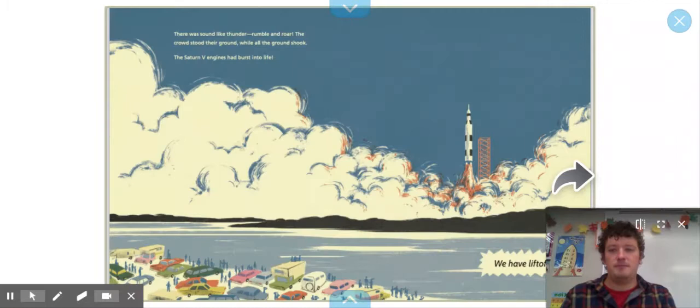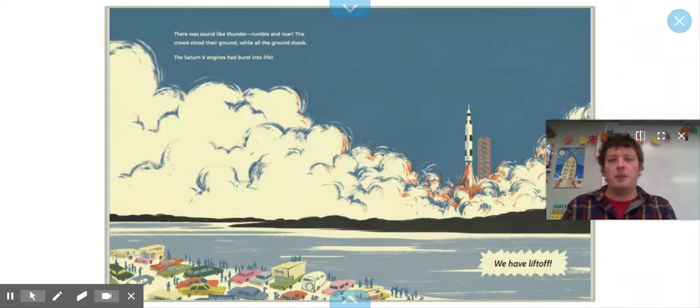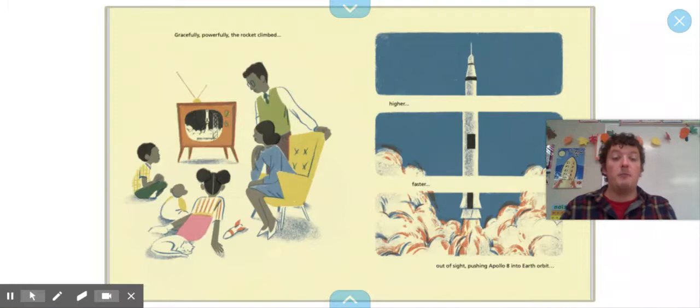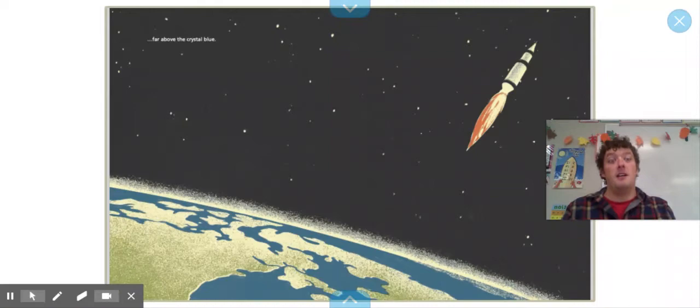Nine, eight, seven. There was a sound like thunder, rumble, and roar. The crowd stood their ground while the ground shook. The Saturn V engines had burst into life. We have liftoff. Gracefully, powerfully, the rocket climbed higher and faster out of sight, pushing Apollo 8 into Earth orbit.